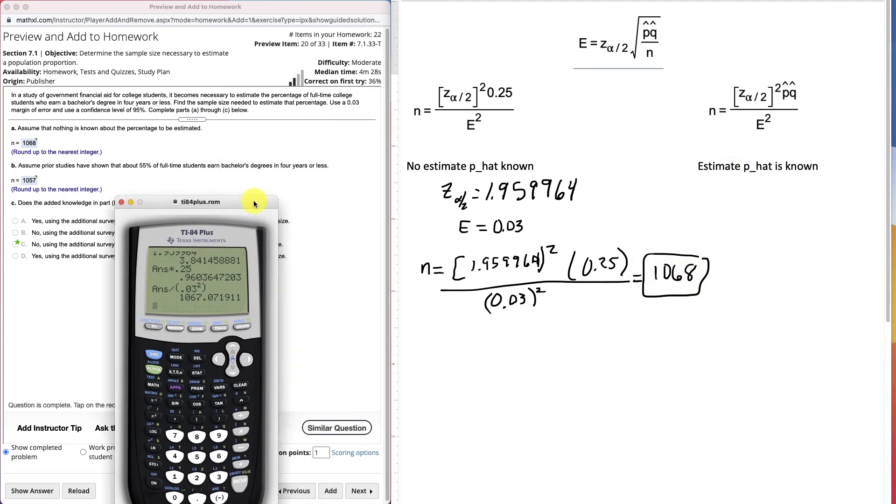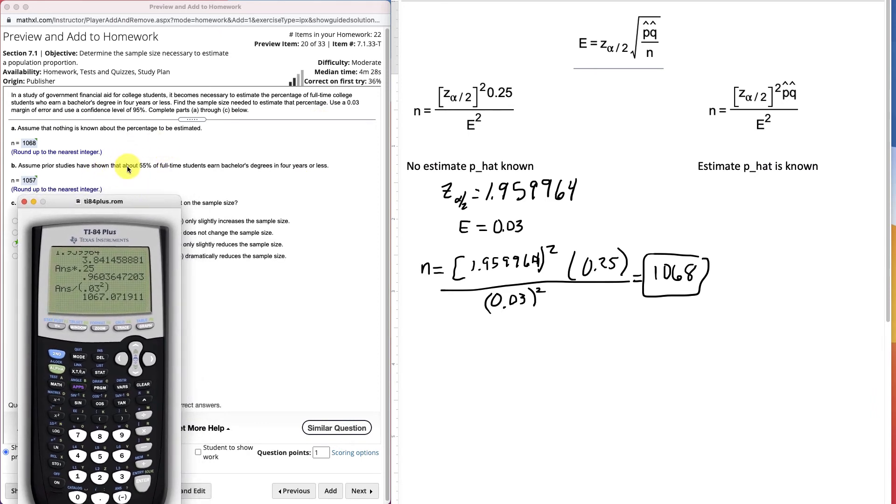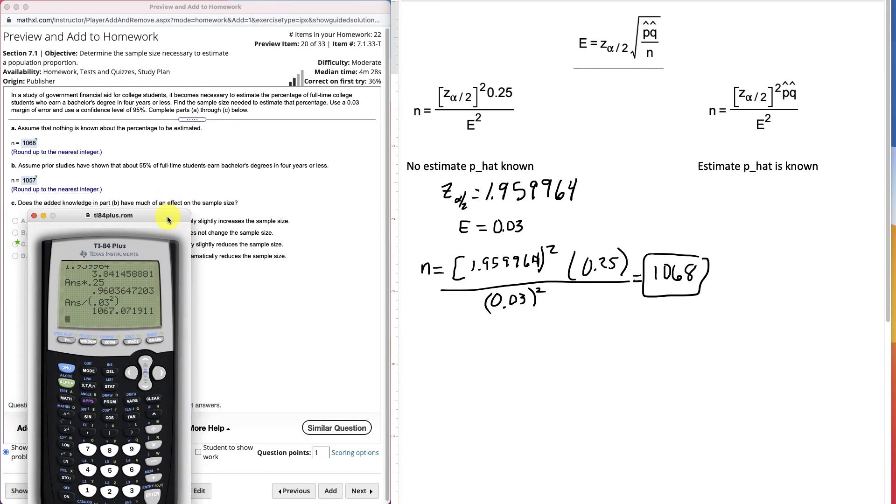Now the other one down below here says, assume that prior studies have shown that about 55% of full-time students earn a bachelor's degree in 4 years or less. Now we're given an estimate of p-hat. We're given an estimate of a sample proportion.